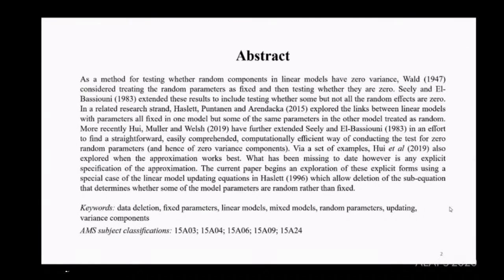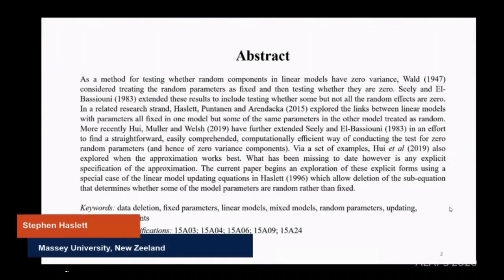There's a related research strand looking at links between linear models with parameters all fixed in one model but some random in another. More recently, Hui, Muller and Welsh extended these results, trying to find a straightforward, computationally efficient way of conducting a test for zero random parameters. What's been missing is any explicit specification of the approximation. I'm going to look at that using explicit forms from a 1996 paper which allowed deletion of the sub-equation specifying whether model parameters are random rather than fixed.